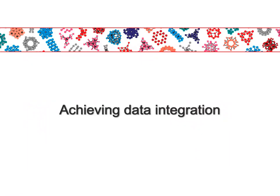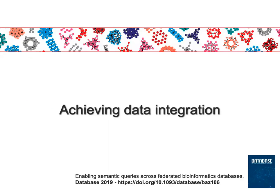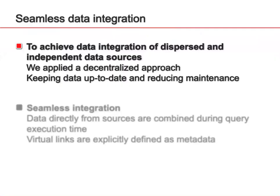Now I'm going to talk about our approach — how we solve these problems to achieve data integration and answer complex questions. This work was published in the Database journal, volume 2019. In this approach, what we do is seamless data integration. To integrate this scattered, dispersed data from independent data sources, we apply a decentralized approach — we are not loading the data into a central repository or database. By doing so, we significantly reduce maintenance efforts, since data is maintained by the database owners and is always up to date because we retrieve it directly from original data sources.